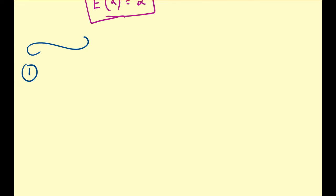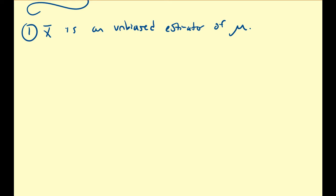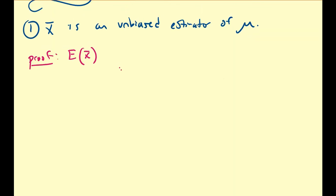So let's work this out in proof for the two statistics we've been using. Property one: let us show that X-bar is an unbiased estimator of mu. Why do we choose X-bar to estimate mu? This proof will verify that for us. Let us start by finding the expected value of X-bar, where X-bar is a random variable in its own right.